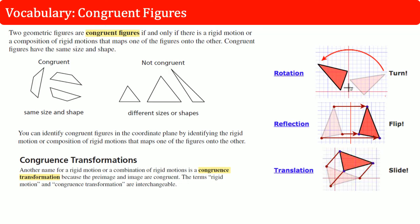Our three that are congruent transformations are rotations because notice here it preserves the length and the angle. Reflection, which is a flip. Notice that the shape and size are the same, as well as translation, which is a slide. The angles and the lengths are the same.